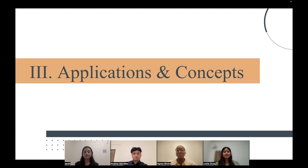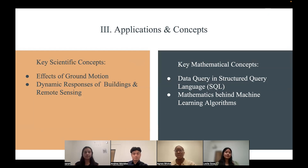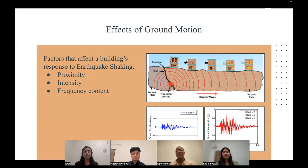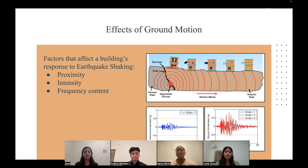Thank you, Sarah. I'm now going to cover the third point in our agenda, which is the applications and concepts. This point contains two subdivisions: the key scientific concepts and the key mathematical concepts. First, we'll take a look at the effects of ground motion. Buildings respond to earthquake shaking in various ways, and there are multiple factors that contribute to those specific responses. First, there's the building's proximity to the earthquake — buildings located closer to the epicenter generally experience more severe shaking. Some properties of earthquake ground motion are intensity and frequency content. Intensity refers to the strength or amplitude of ground shaking, and frequency content represents the range of oscillations in ground motion. Different buildings have natural frequencies at which they resonate, and the intensity of ground motion directly influences the dynamic behavior of a building.